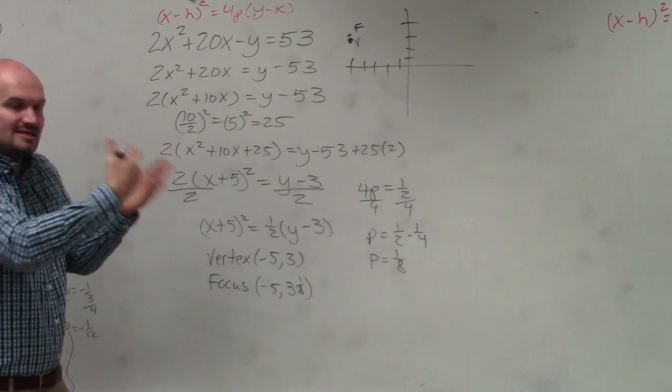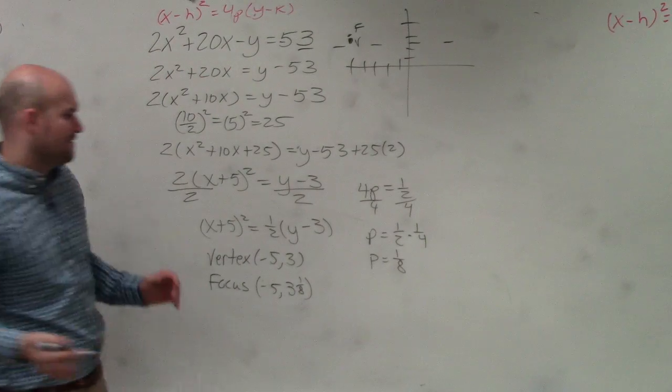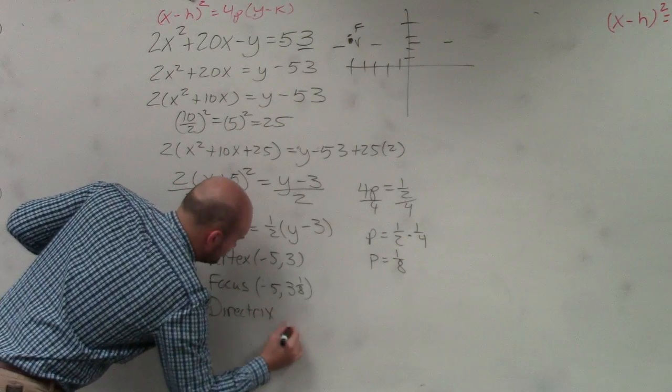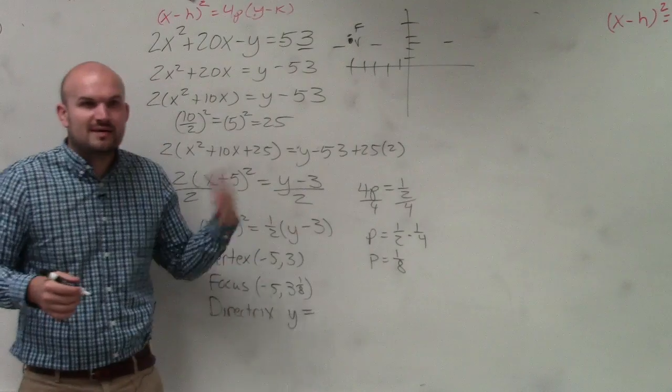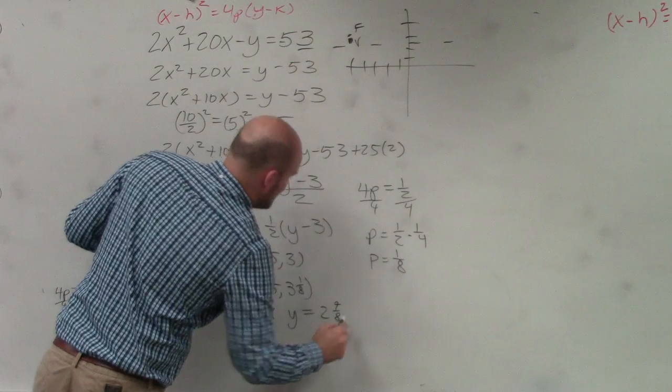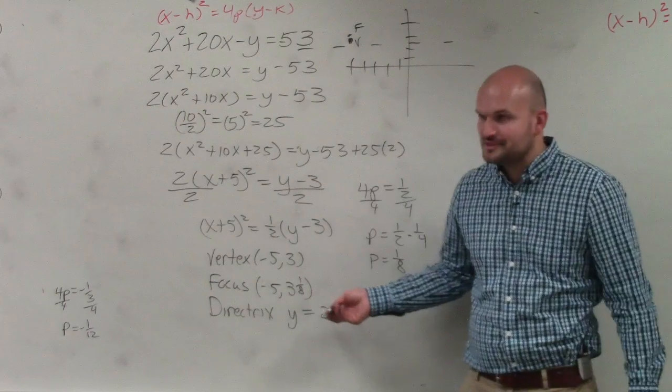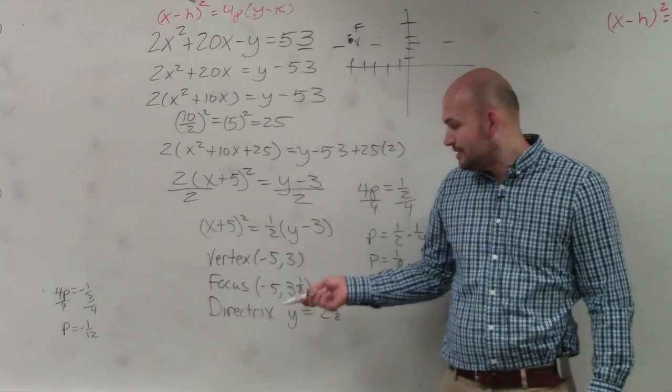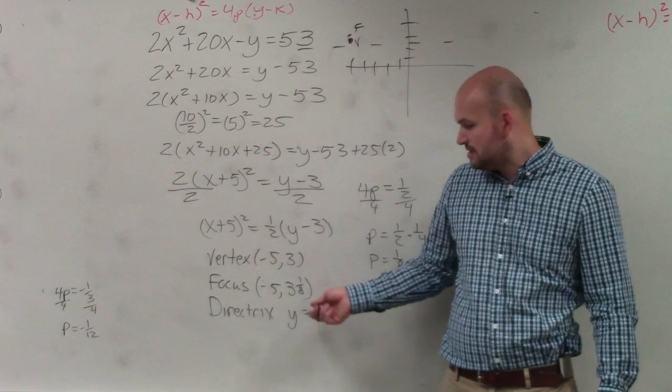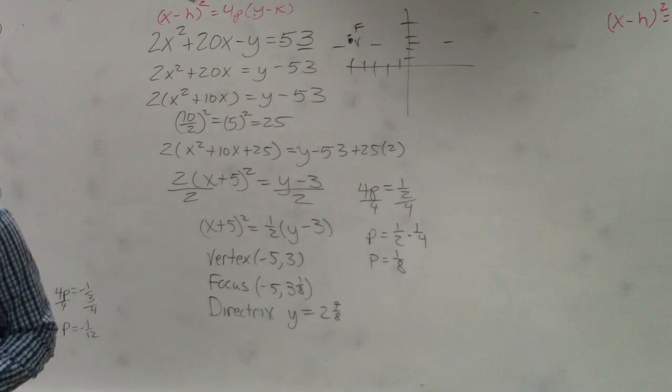And then my directrix, I would subtract, and that's going to be a horizontal line, which would be x equals or y equals? Y equals. And then, what's 3 minus 1 eighth? 2 and 7 eighths. Now, typically we don't really use mixed numbers as our fractions, but because I'm a little short on time, you guys would convert. We would either use this as an improper fraction or use that as a decimal. But I'll leave them as mixed numbers for this tutorial.